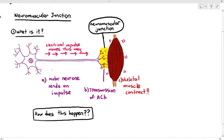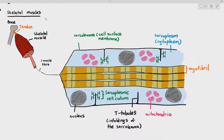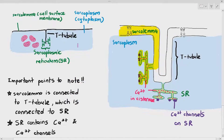Before going through the detail, let's revise the skeletal muscle fiber. A generalized skeletal muscle fiber has the myofibril, sarcoplasmic reticulum, T-tubules, sarcolemma, and sarcoplasm. The sarcolemma is the cell surface membrane directly connected to the T-tubules, which are infoldings of the cell surface membrane. The T-tubules are in turn connected to the sarcoplasmic reticulum.